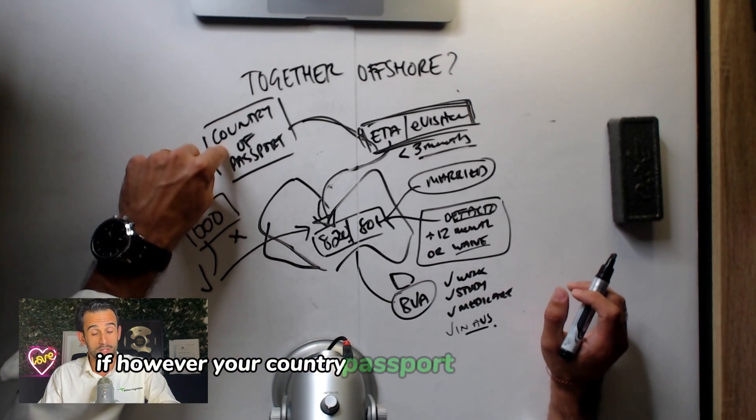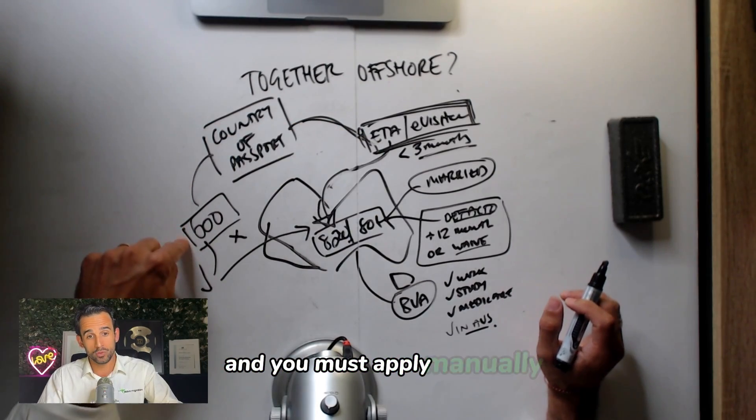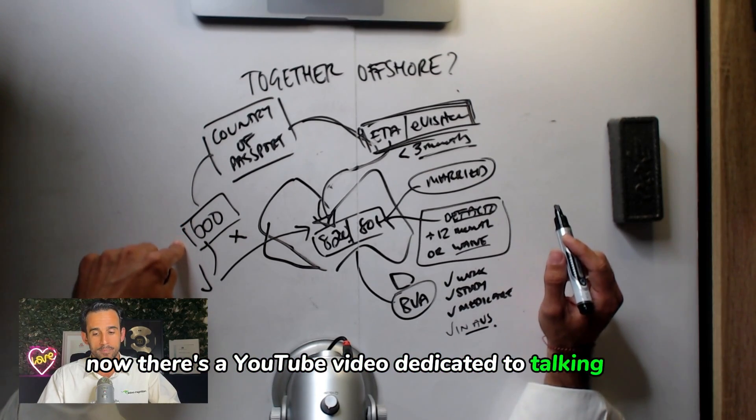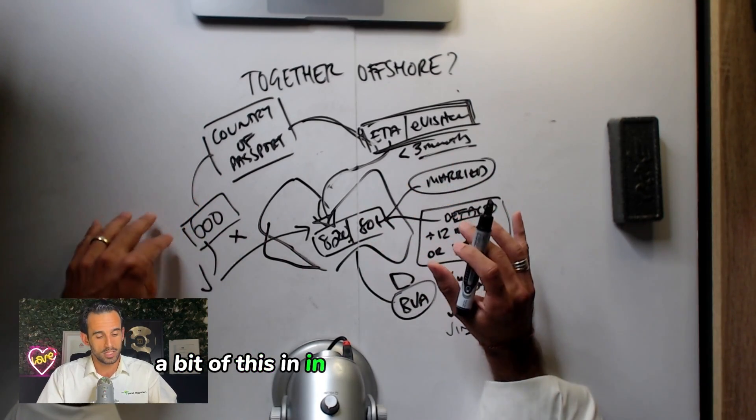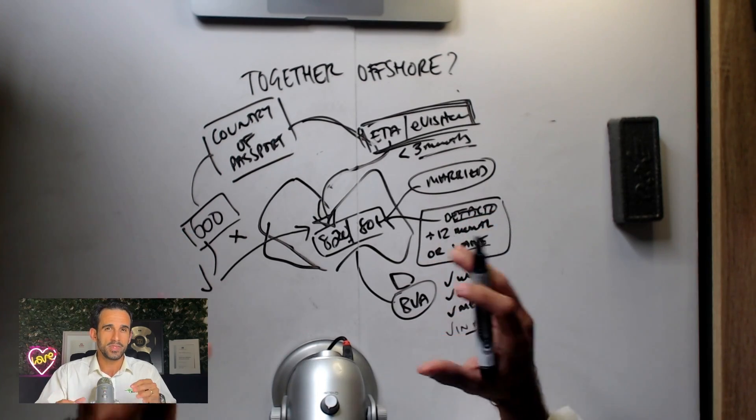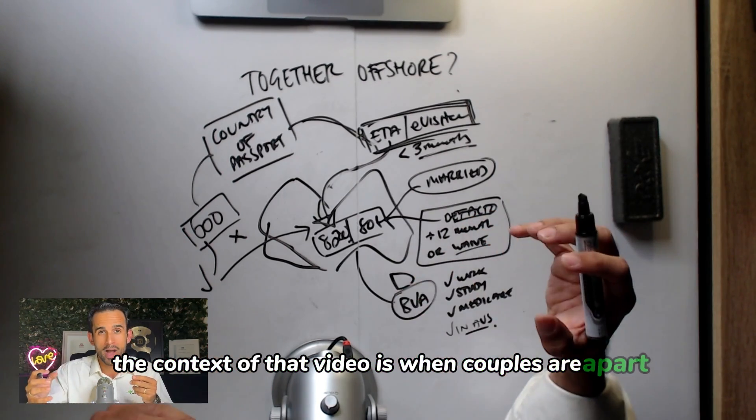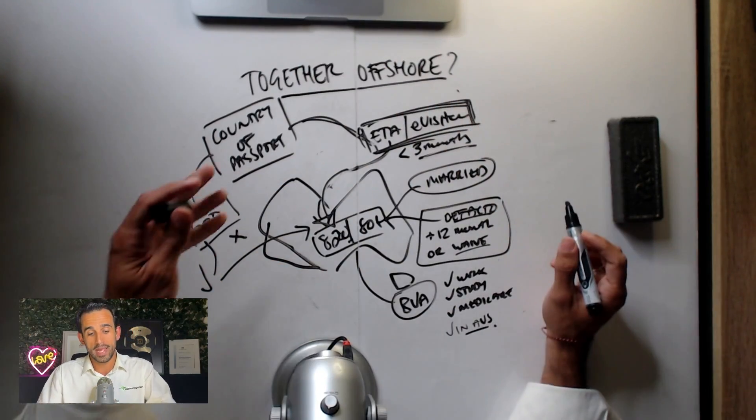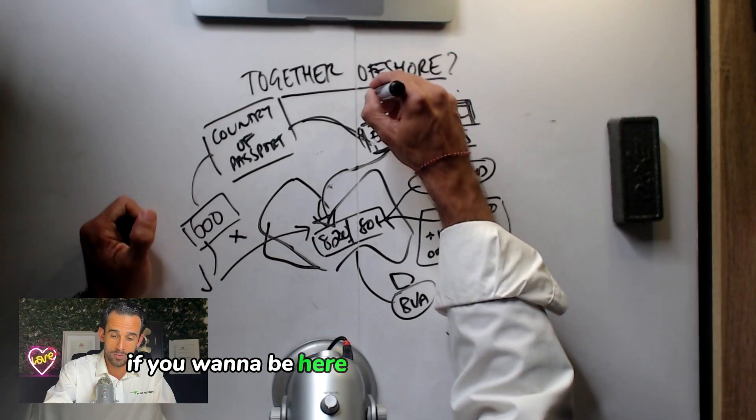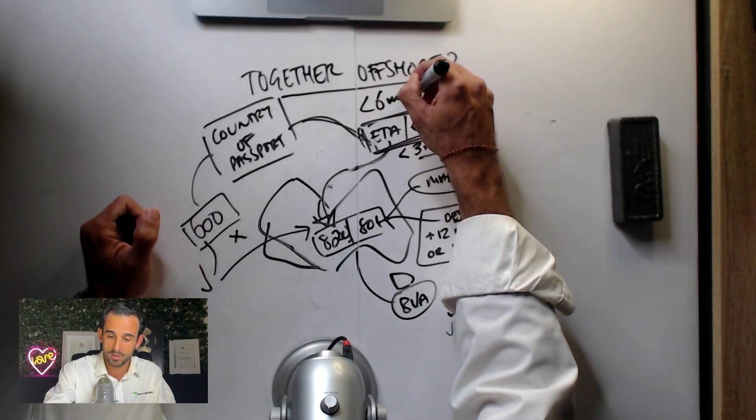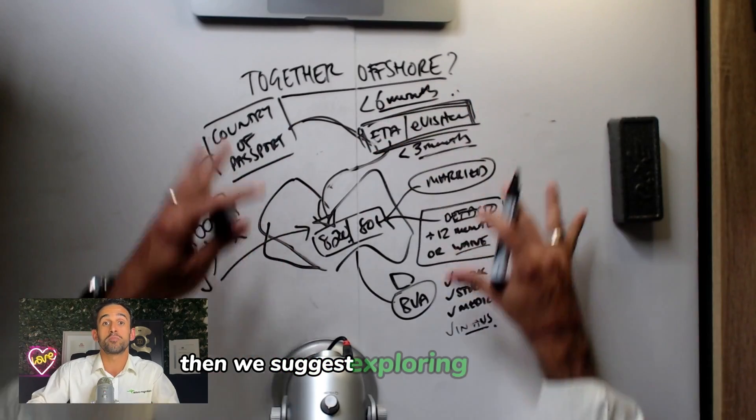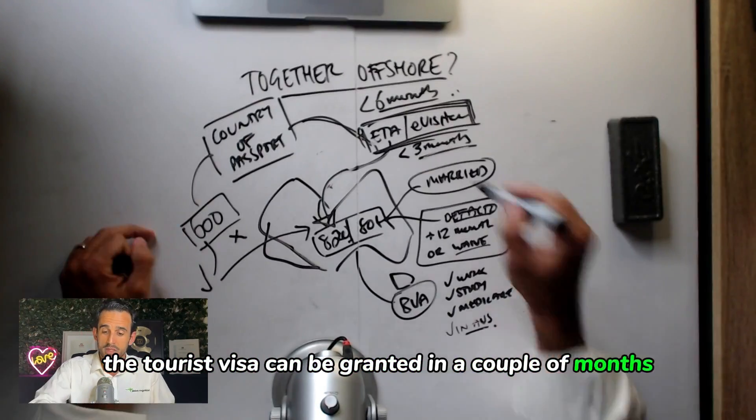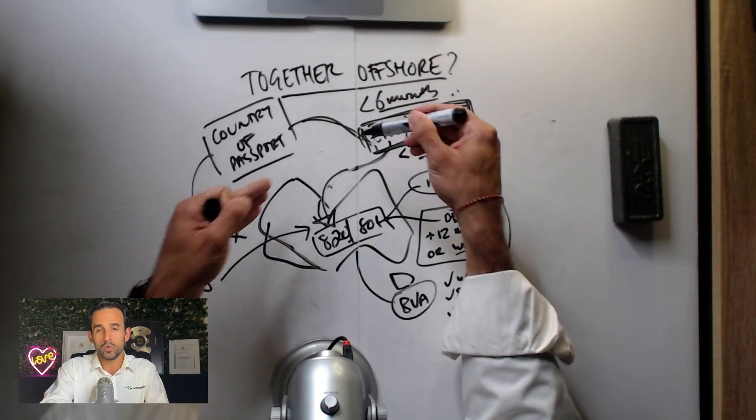If however, your country passport does not permit this, and you must apply manually, whether or not this is an option depends on the outcome of this visa. Now, there's a YouTube video dedicated to talking about this in a lot more detail, in that the context of that video is when couples are apart, but it still applies to the situation. Even if couples are together offshore and you're trying to get in quickly, if you want to be here within the next six months, then we suggest exploring this option. The reason is that the tourist visa can be granted in a couple of months, these are instantly granted. So if they work, you're in quickly.